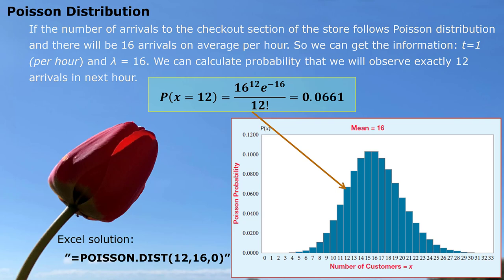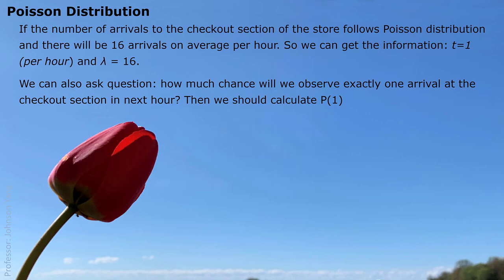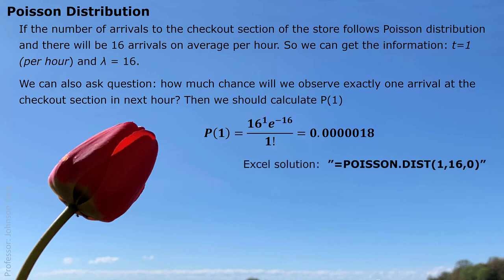If we are talking about x maximum 12, that means including all the previous situations. We would use cumulative case and the last parameter would be chosen 1. Here we also show you how this operation should be done on your calculator. But if you have a different model of calculator, this order might be different. You can try it out yourself. For the same question background, we can also ask how much chance we may observe exactly one arrival at the checkout section in next hour. Here x changes the value 1. Here is the probability, very small. Correspondingly, Excel solution.